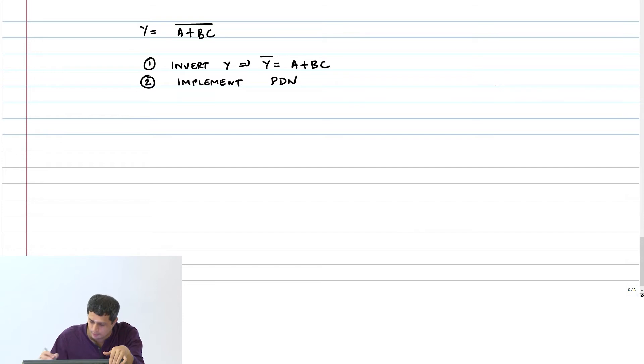So we will first do this step. I have A plus BC. How do I implement this? A in parallel with B and C. A in parallel with B and C. This is my output.